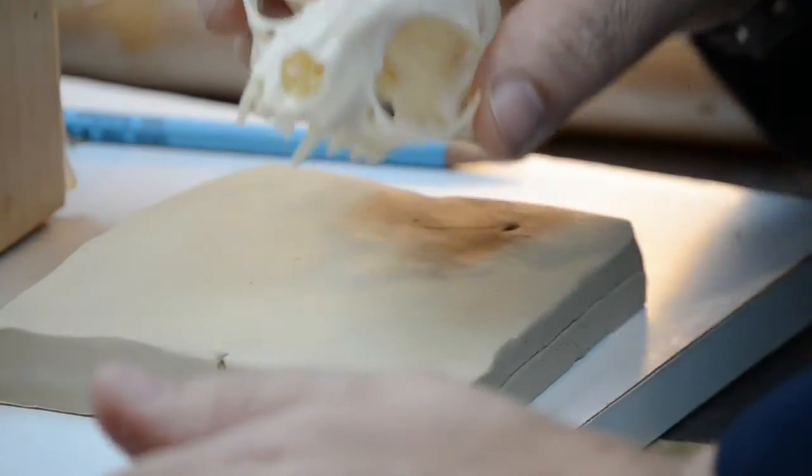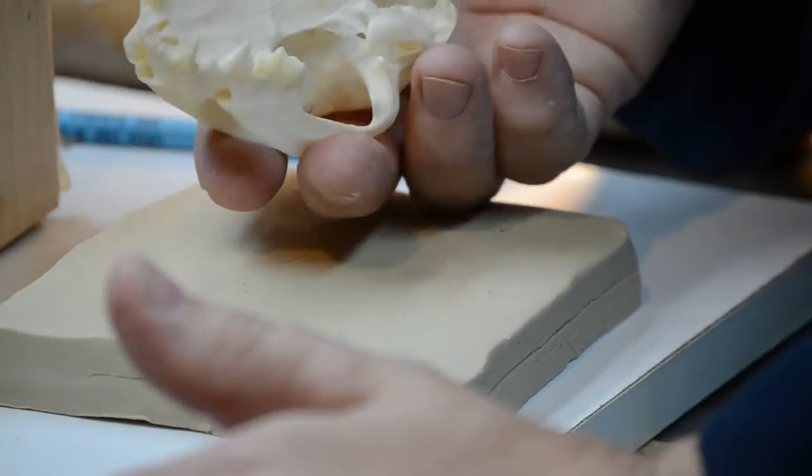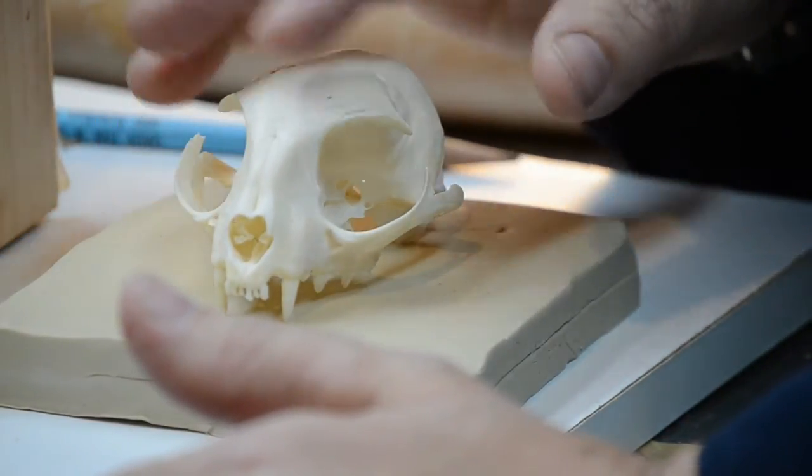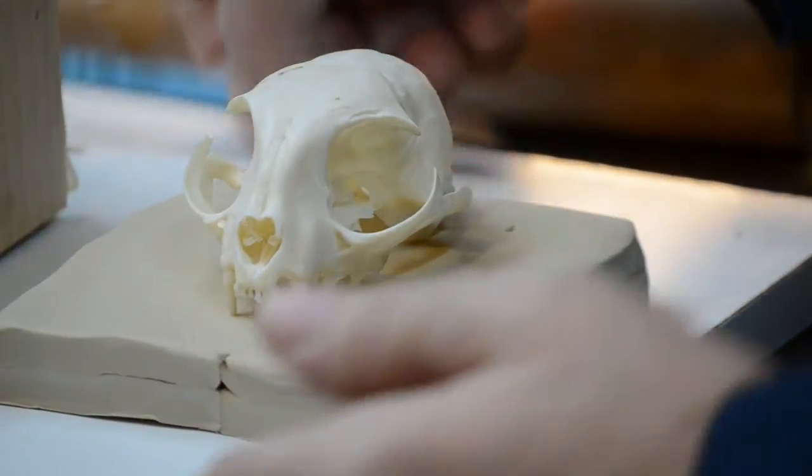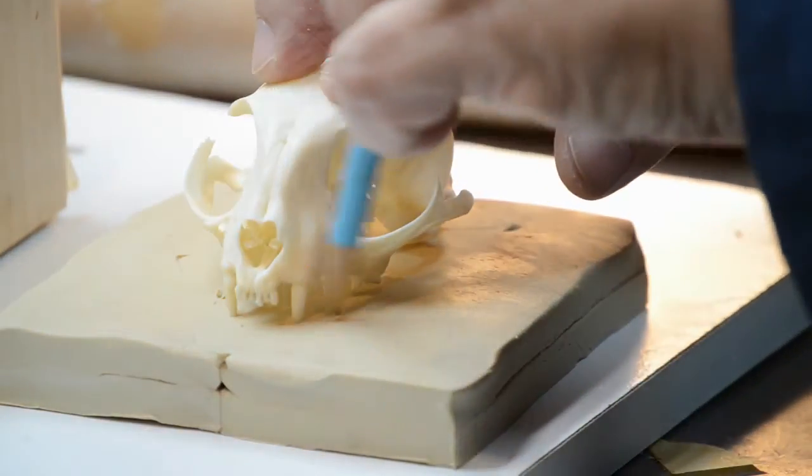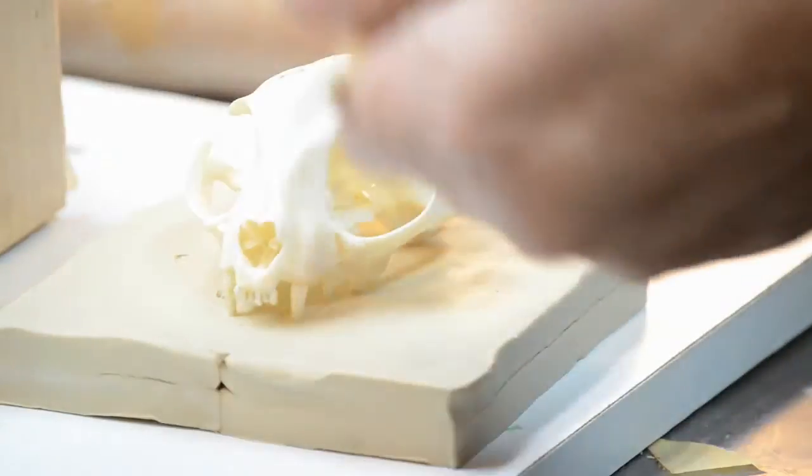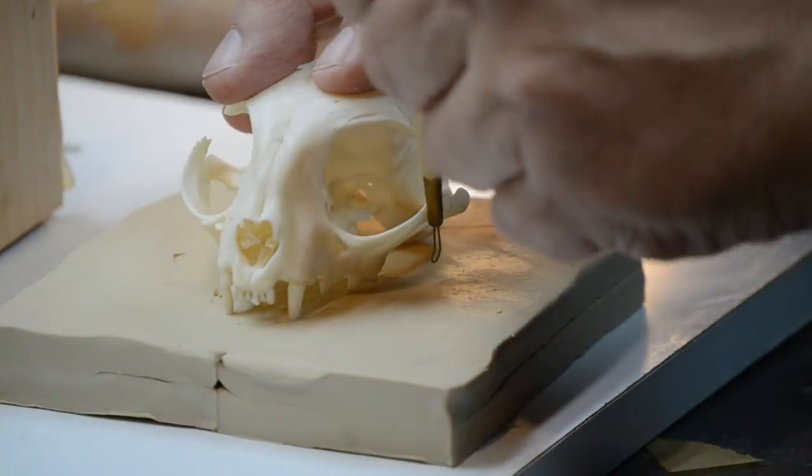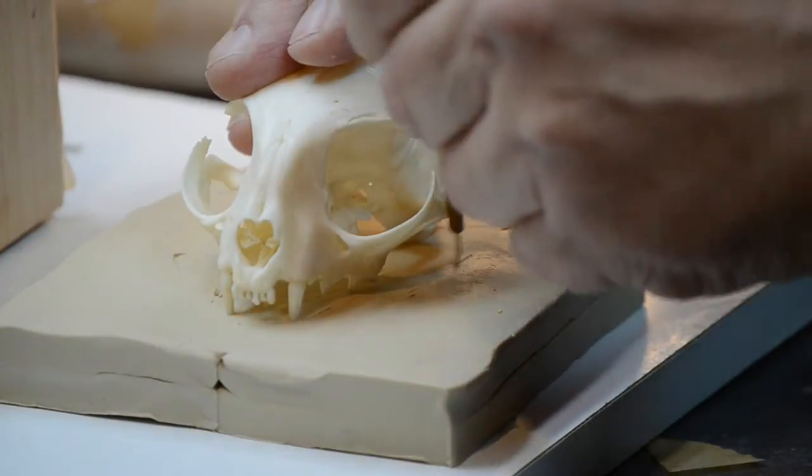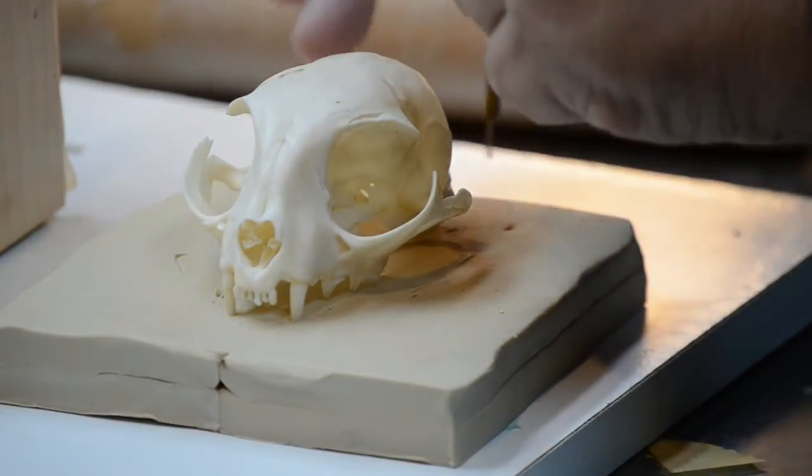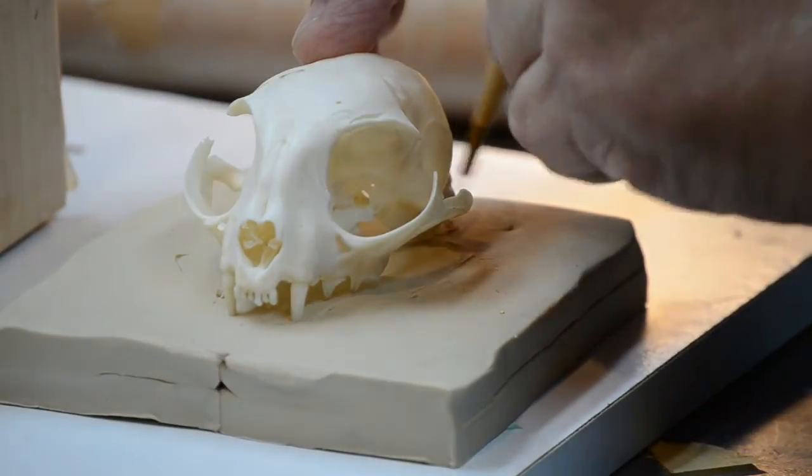We have now the complete upper skull. Now what I want to do is very simple: I want to center this on the clay and very quickly trace around it on the clay. You can use a pencil, you can use a modeling tool, anything, just to simply mark the clay where the skull is sitting.